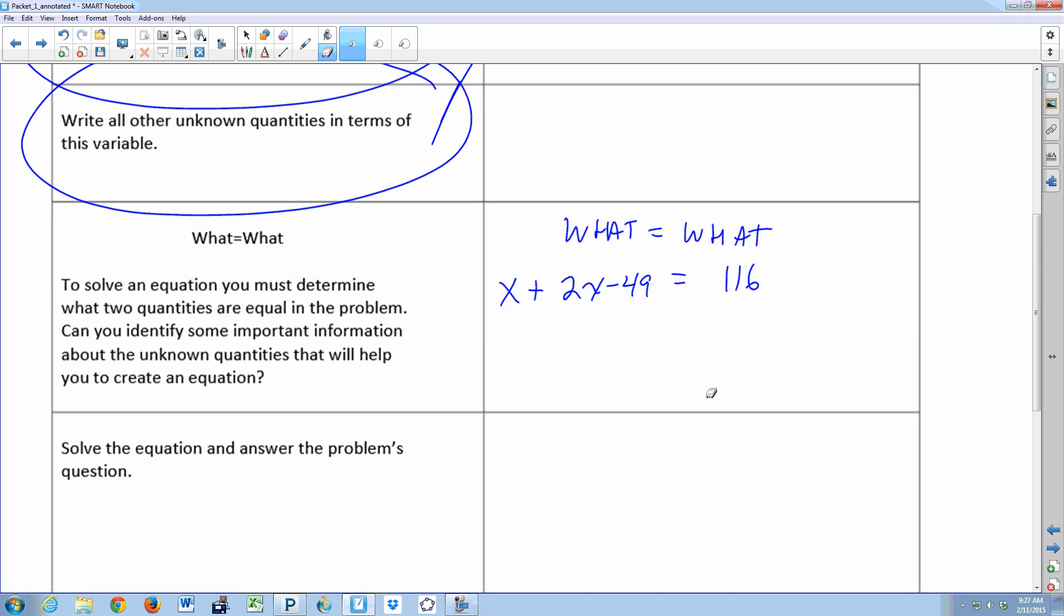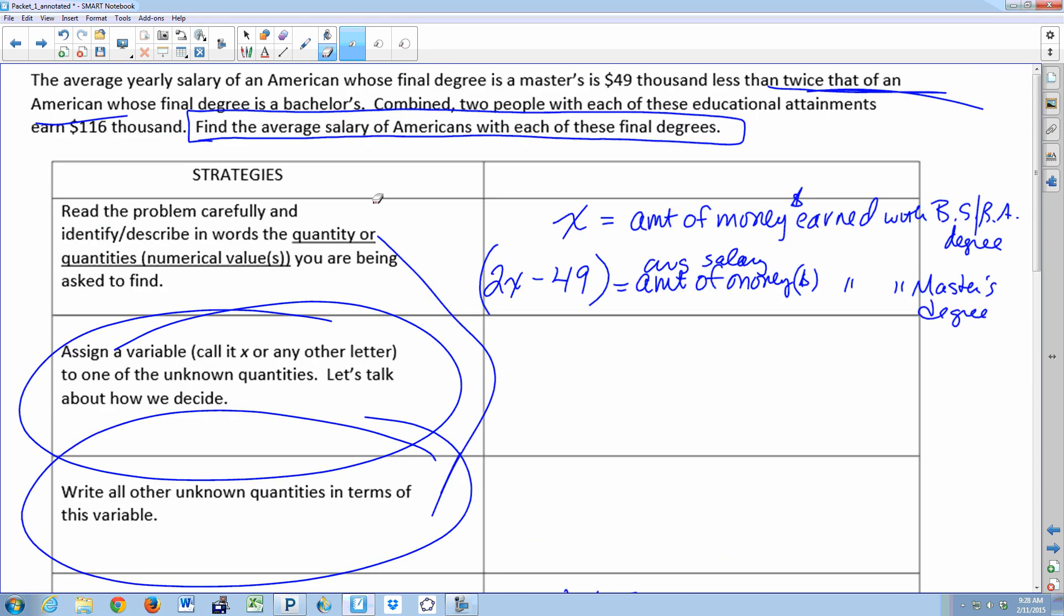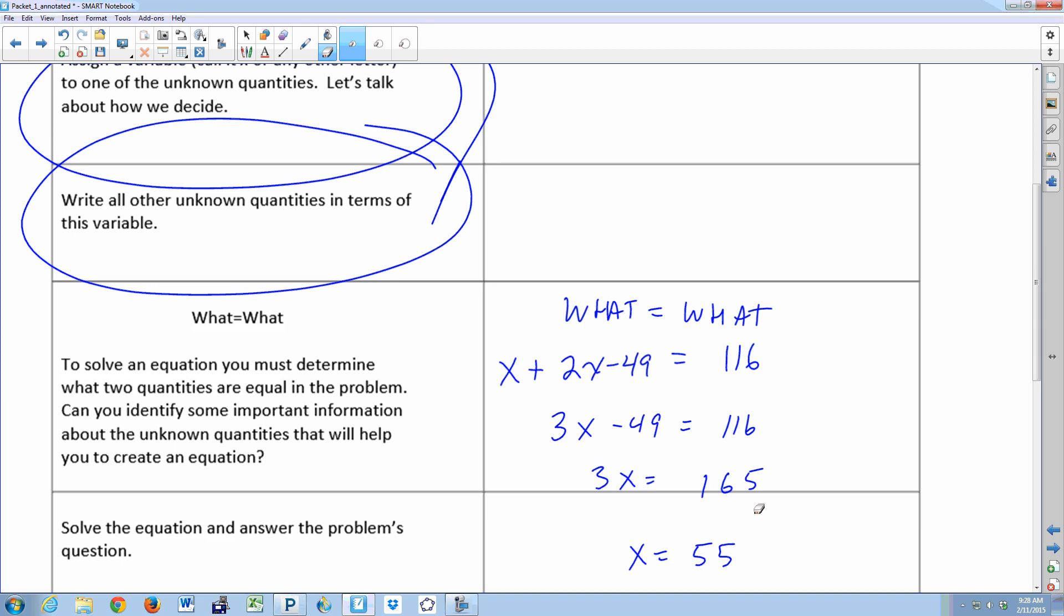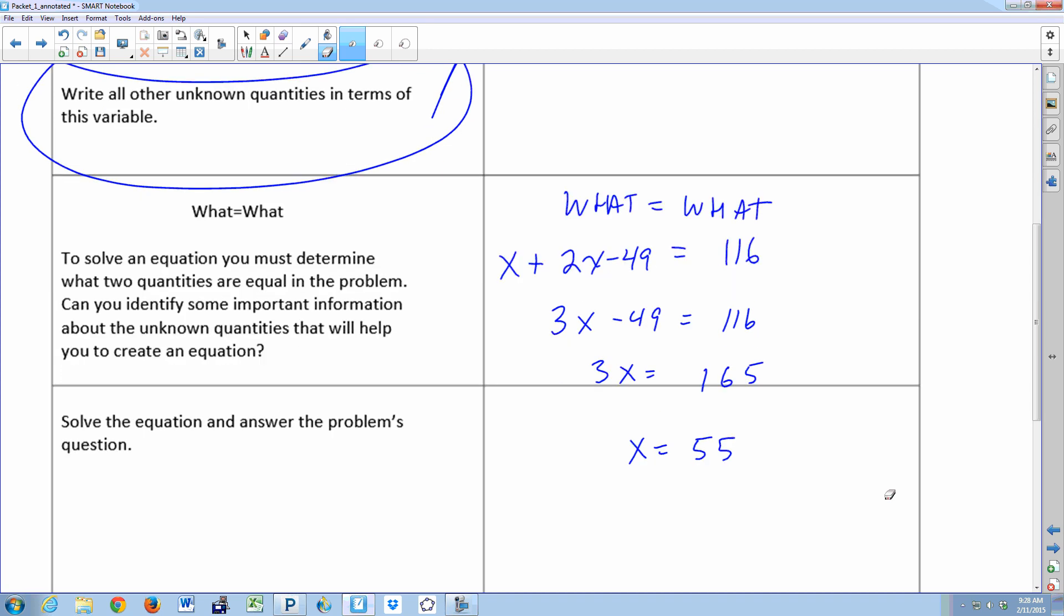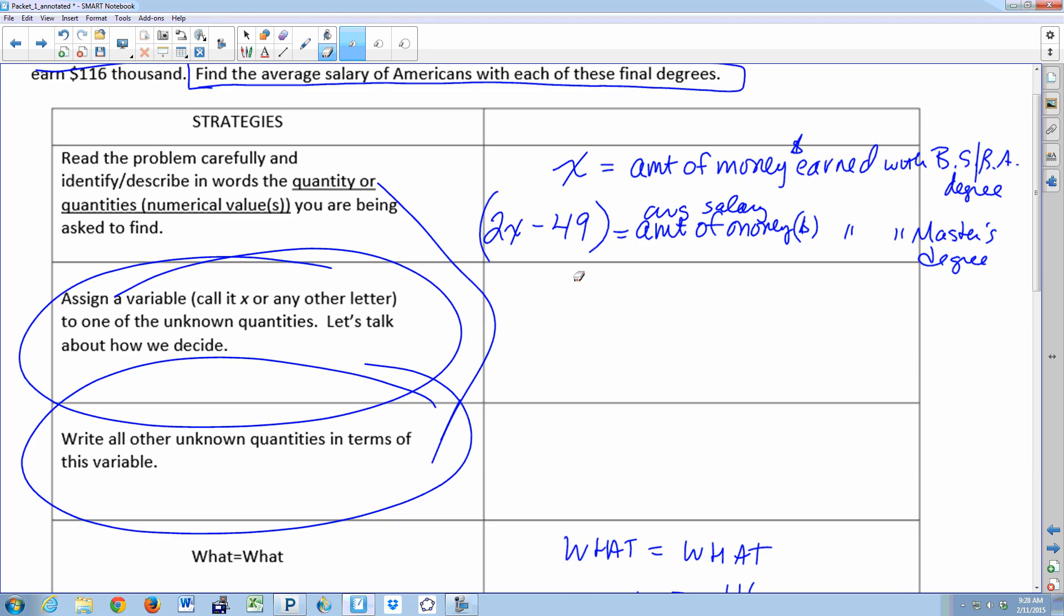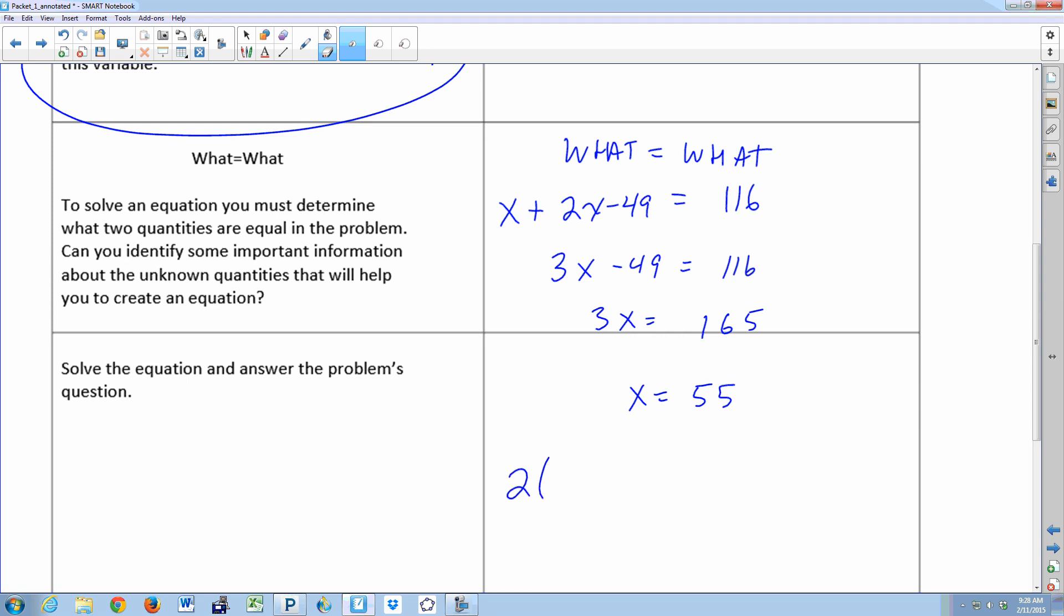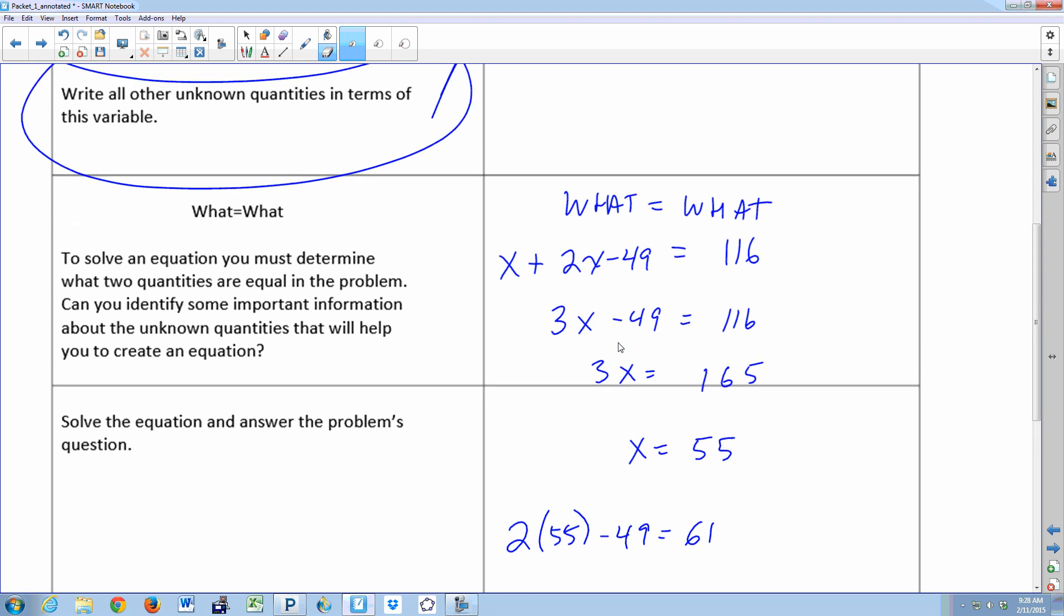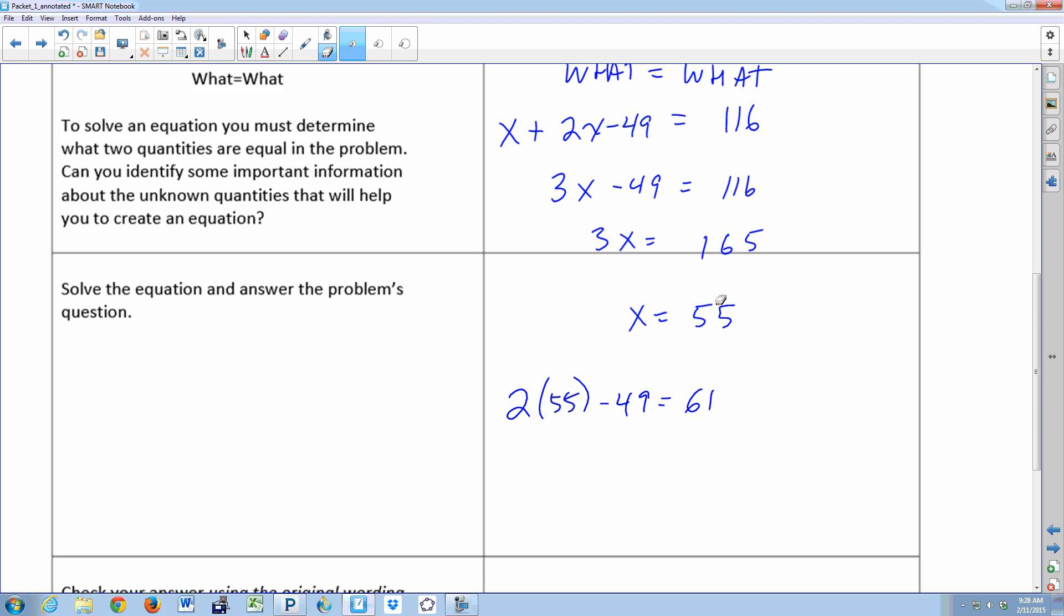Now we have our what equals what. Moshe's already given us one side of the what equals what with 116. Sometimes it's not a bad idea just to write here: the average salary earned with a bachelor's degree plus the average salary earned with a master's is 116. Then you can plug in your variables. So here we have X plus 2X minus 49. And from here, you're golden. I know every single one of you in this class can solve this from here. You combine your like terms on the left side. You add 49 to each side. And help me here, make sure I don't make a mistake. So X equals 50, what? 55. Thank you.